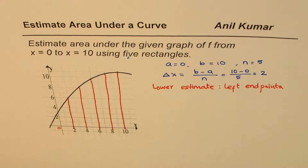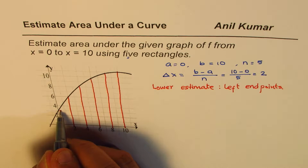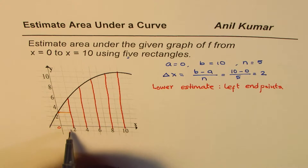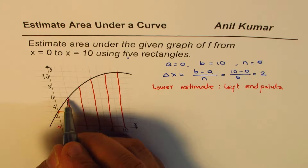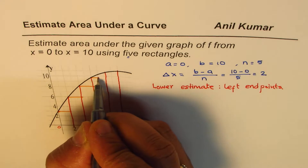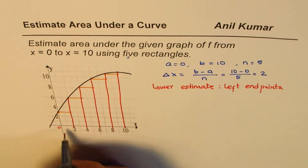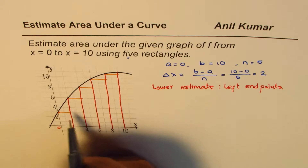Left end points mean that when we form our rectangles, we take the left side of each rectangle as the key position. So the first rectangle uses the left end point, and accordingly we make five equally spaced rectangles with a width of 2 between each.